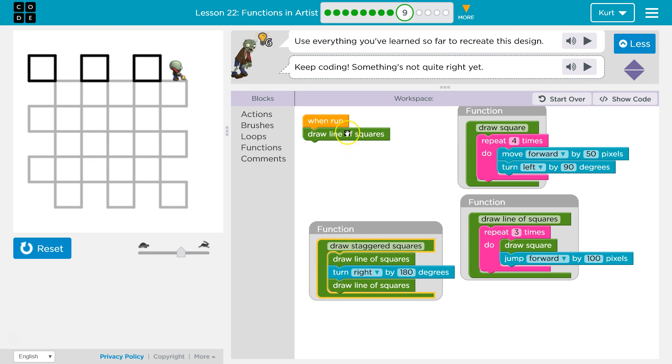And so this will run, now instead of calling, asking draw a line of squares to run, we're just going to ask draw staggered squares to run, because this will draw that full line, we'll turn 180 degrees around, and then we'll draw another whole line of squares. Let's draw a line of squares, zoop, right here, and it repeats three times drawing each square. So, draw staggered squares uses draw a line of squares twice, because we draw this line of squares, then we turn around, and then we draw a line of squares again, zoop, this line. Let's test,